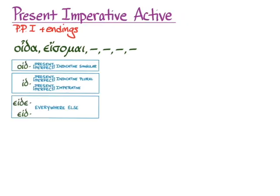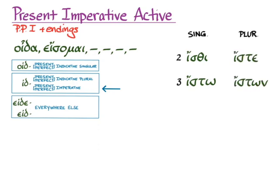The present imperative active is going to send us back to the id stem, and we'll get isthi, isto, iste, and istone. So notice again that it's the id stem, but pretty much everywhere that delta changes to a sigma.